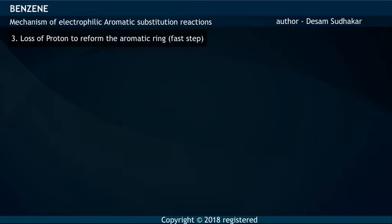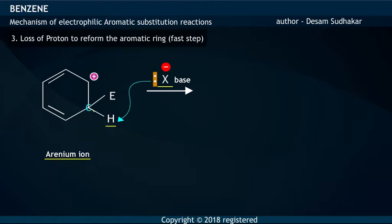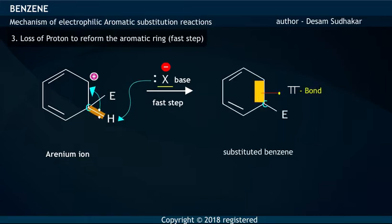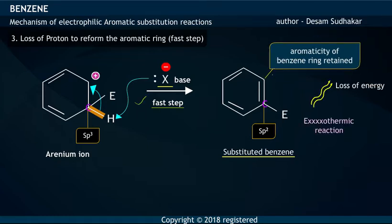Step 3 involves loss of a proton from the Arenium Ion to re-establish aromaticity. In the final step, the base, using its lone electron pair, removes the proton from the Sp3 hybridized carbon of the Arenium Ion. The two electrons of the C-H bond are then used to form a pi bond, thereby forming a substituted Benzene. The aromaticity of the Benzene Ring is reformed. This is a fast and exothermic step.